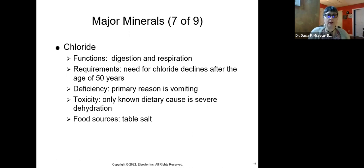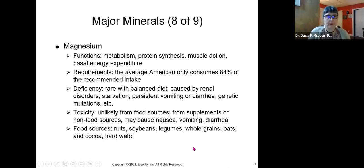Now, chloride is the next one. Function is for digestion and respiration. The need for chloride will decline as you age 50 and up, you're going to need less chloride. So the deficiency is primarily due to vomiting. Toxicity is known to cause, it's the only known dietary cause. And it's usually going to be severe dehydration where you have this chloride toxicity. Where do you get the source? Because you know, salt is sodium chloride. Sodium is an ion, so it binds with chloride.